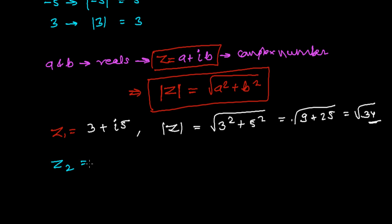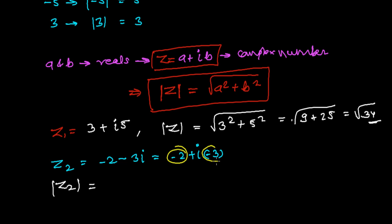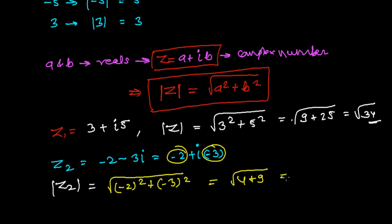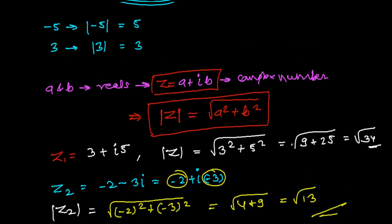Similarly, let's say we have a complex number z2 equals minus 2 minus 3i. The absolute value of z2 is the square root of (minus 2) squared plus (minus 3) squared, which is the square root of 4 plus 9, giving us the square root of 13.